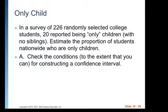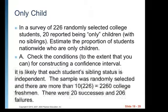First though, we've got to check our conditions for constructing a confidence interval. It is likely that each student's sibling status is independent. The sample was randomly selected, and there are more than 10 times 226, 2,260 college freshmen. And there were 20 successes, and then if we subtract, we get 206 failures to be only children. And so we've checked all three of our conditions. We've checked that there was random selection. We've checked that our sample is no more than 10% of our population. So both of those give evidence toward the sibling status being independent. And then we've checked that our sample size is large enough by checking that there are at least 10 successes and 10 failures.